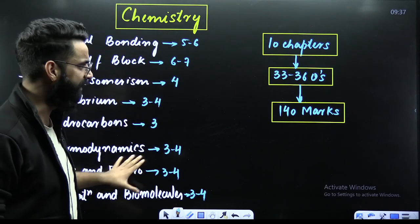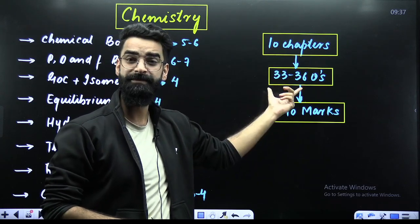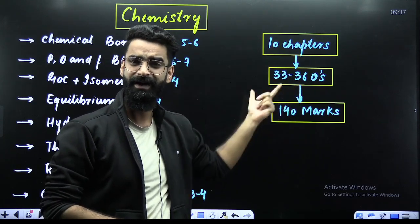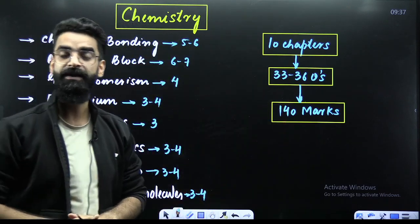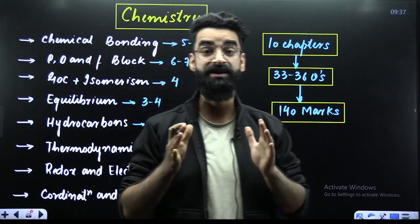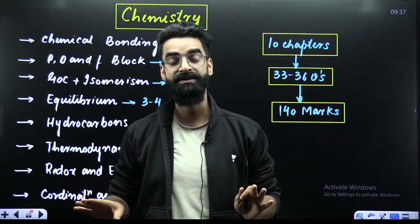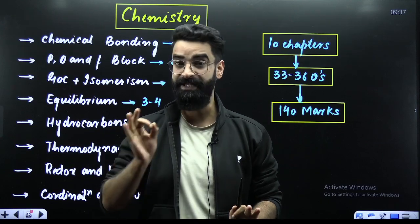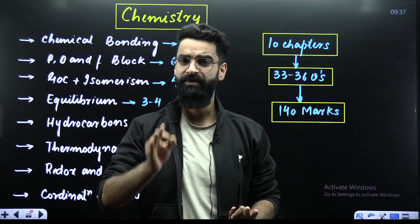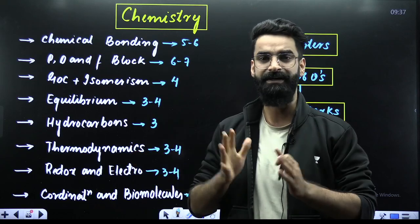These are the number of questions which have been asked from these chapters. And if you are covering these 10 chapters, that means you are covering your 33 to 36 questions of your Chemistry part. And eventually, if all of them come out to be correct, then surely you'll be getting 140 marks when it comes to the subject Chemistry from these chapters itself.